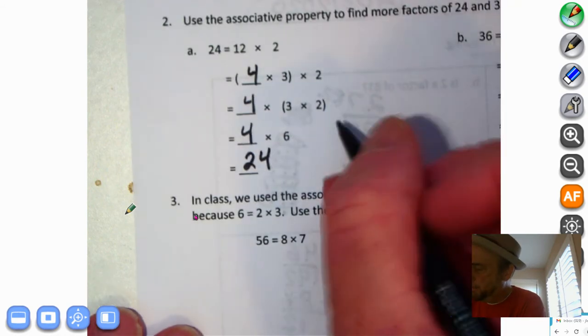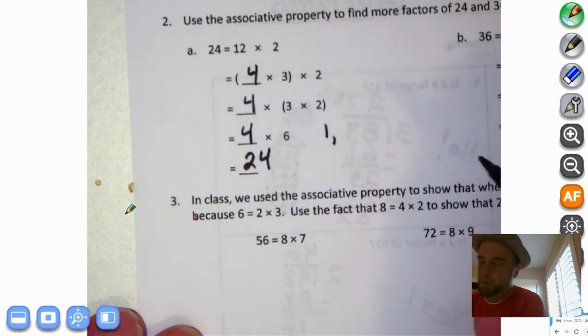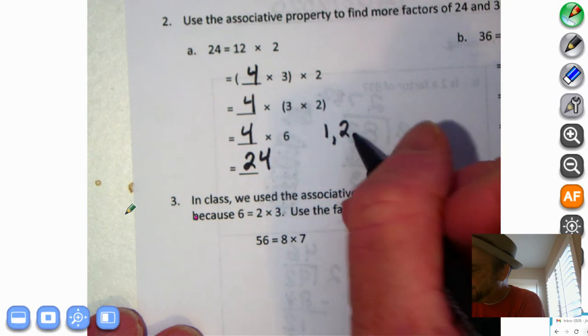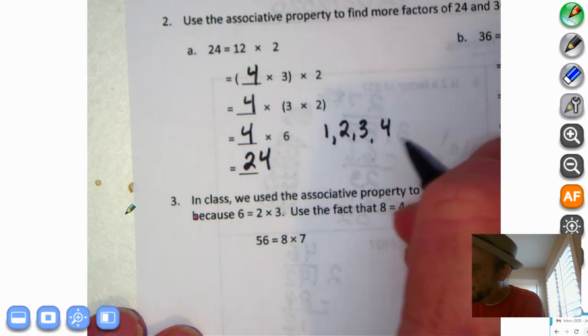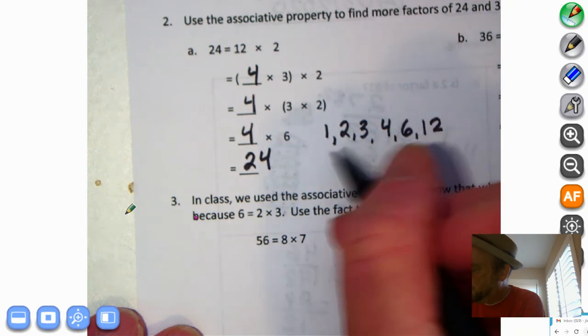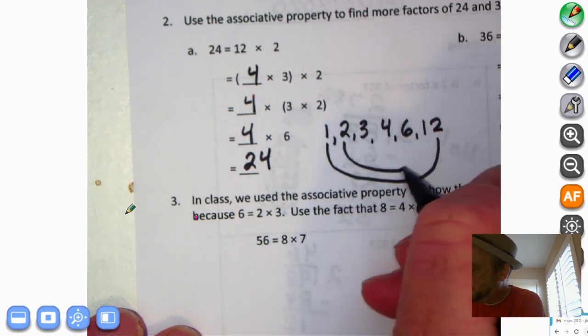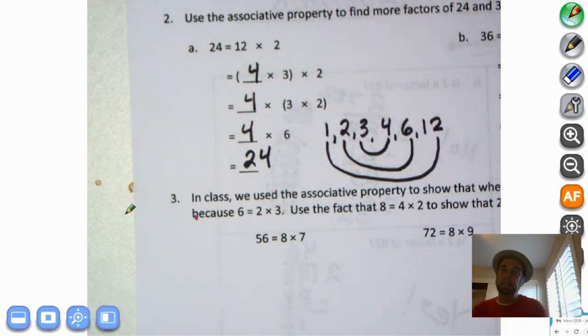So we can see we have some more factors of 24 other than 2 and 12. Let's go ahead and do a little rainbow, upside-down rainbow. We have 1, because 1 times 24. We have the 2, we have 3, we have 4, we have 6 and 12. So 1 times 12 is 12, 2 times 6 is 12, and 3 times 4 is 12. This means it's a composite number. There are more than two factors.